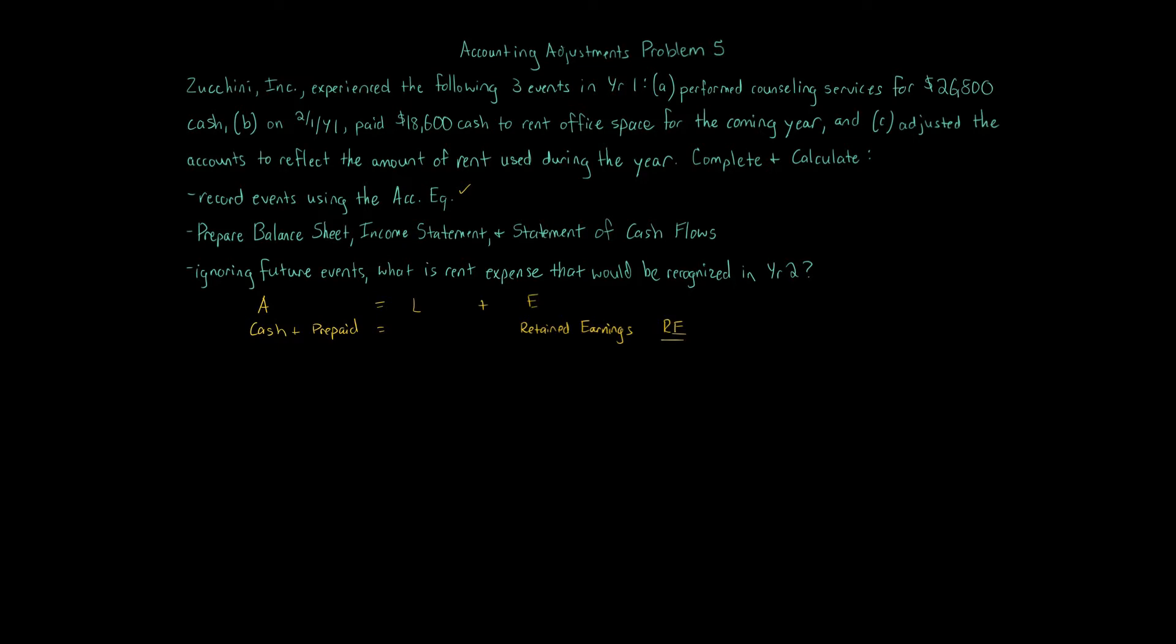Let's go through A. Transaction A, we're told perform counseling services for $26,800 cash. Any effect to assets? Yes. We have an increase in cash, $26,800. Any increase to prepaid rent? No increase to prepaid rent, so we can move on from that one. What about retained earnings? We're receiving cash for performing counseling services. Yes, we do have revenue, $26,800 of revenue, and revenue increases retained earnings. Our accounting equation balances. So $26,800 on the left, $26,800 on the right.